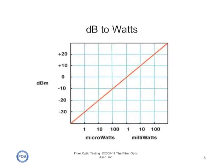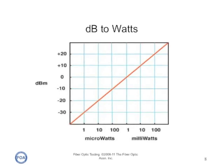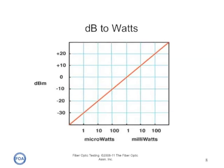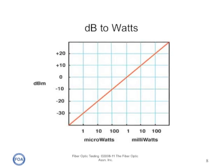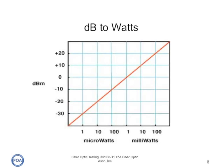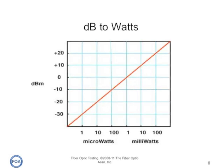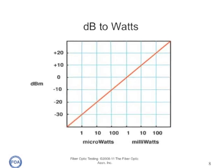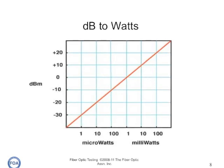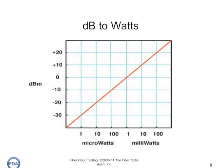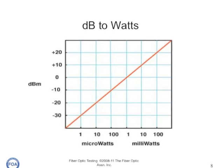Here's the relationship of dBm and optical power in watts shown graphically. This graph covers a range of 10 to the seventh — 10 million to one, or 70 dB — which covers pretty much the range of measurements we make in fiber optics. Lasers, for example, have about a zero dBm output. Optical amplifiers could have plus 20 dB of output, while LEDs may be down in the minus 10 range. Receiver power typically can go down to minus 30 or even further.